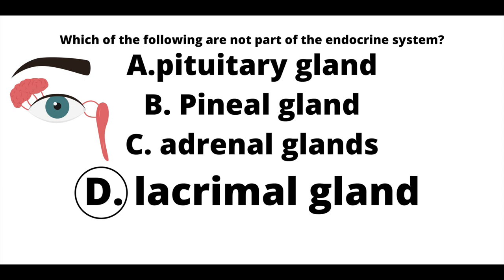Lacrimal gland actually produces tears. Tears go outside of the body, so the lacrimal gland is part of the exocrine system. Just as reference, the lacrimal gland is directly above the eyeball — it's that squishy thing that you see between the eyebrow and the eyeball.